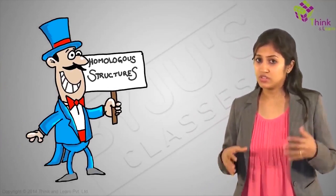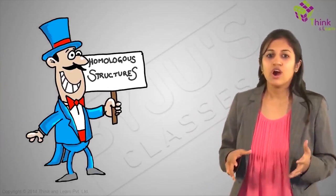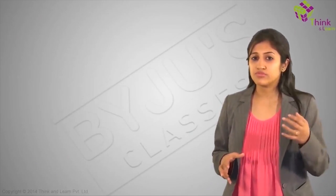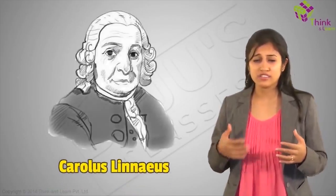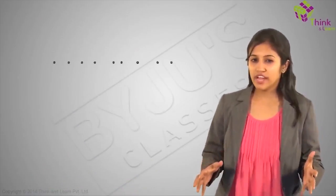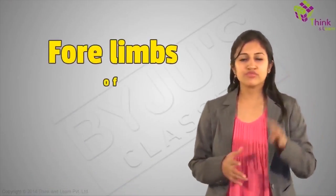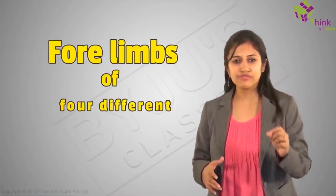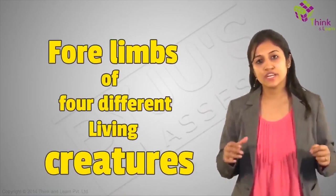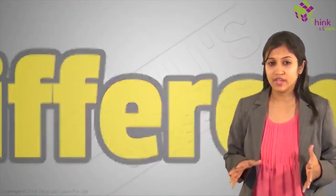Let's look at something called homologous structures, or similar structures, a concept put forth by Carlos Linnaeus. Let us look at the four limbs of four different living creatures to understand what I'm trying to say.